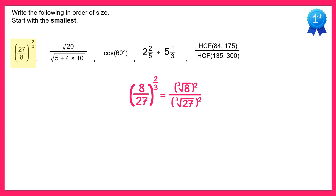Now the cube root of 8 is just 2, so on the top we have 2 squared. The cube root of 27 is just 3, so we have 3 squared on the bottom. 2 squared is just 4 and 3 squared is just 9, so this is the same as 4 ninths.